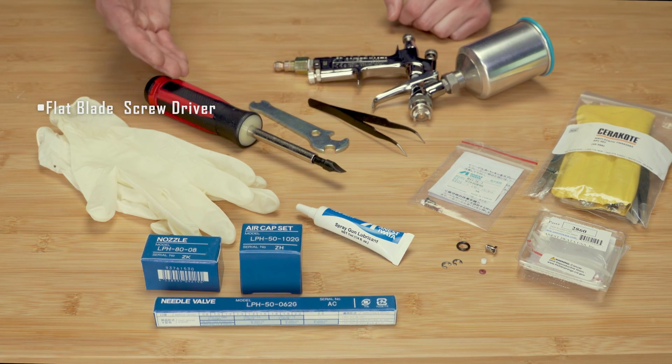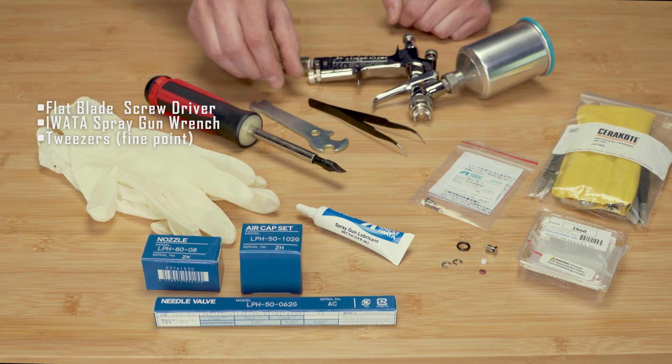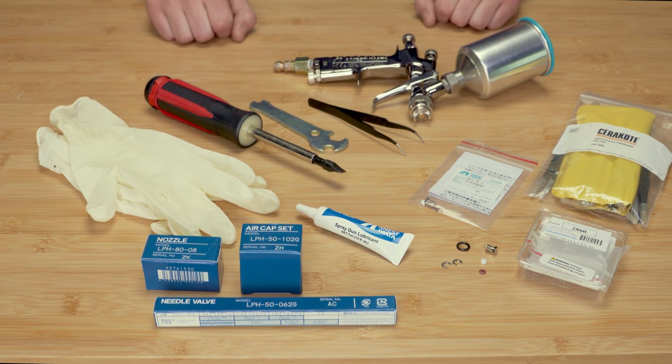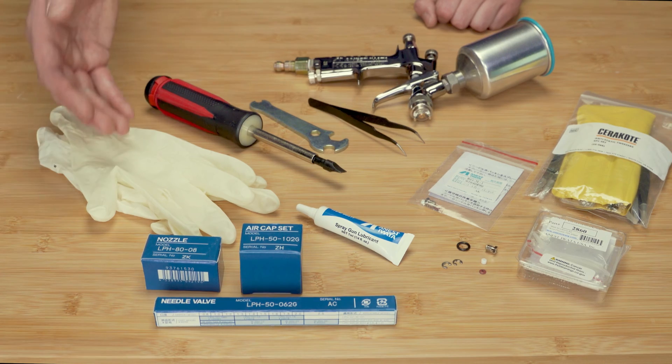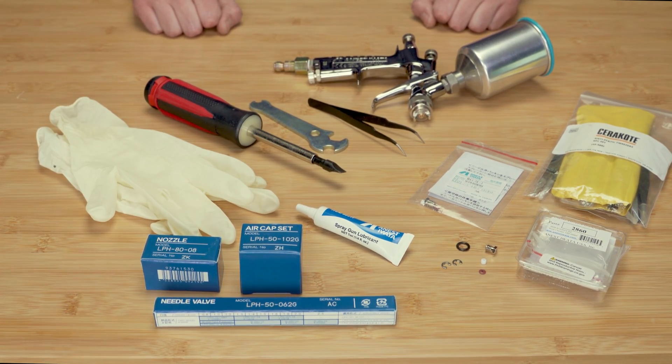The tools required are a flat blade screwdriver, the Iwata spray gun wrench, a pair of tweezers, and of course, your spray gun. Next, it may also be helpful to have a pair of gloves and any other spare parts that you may need to replace.